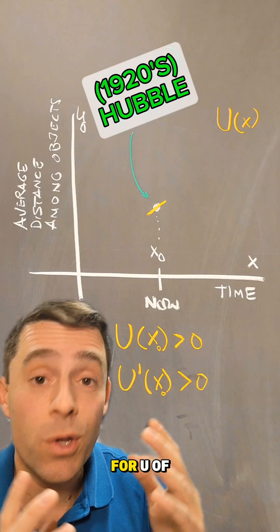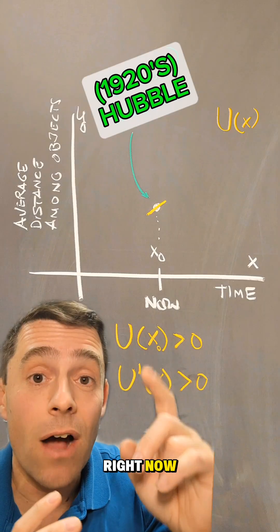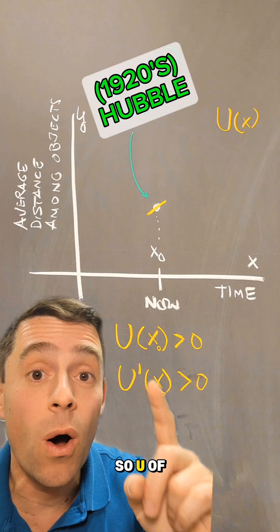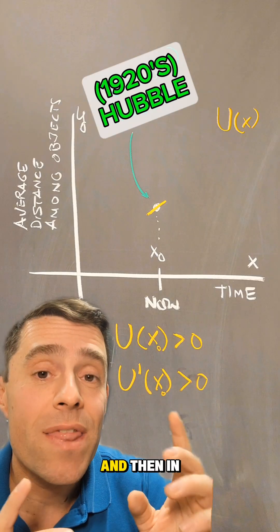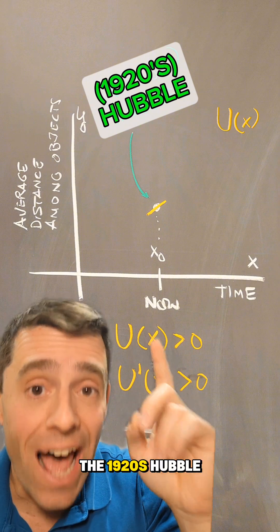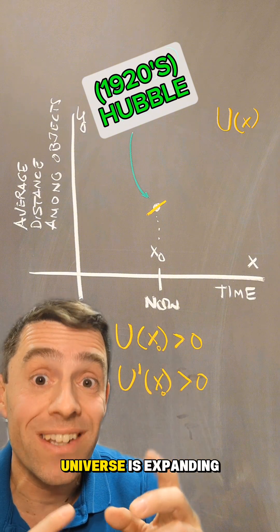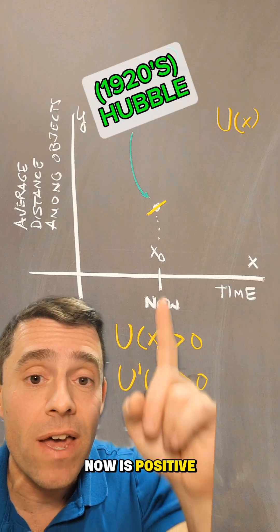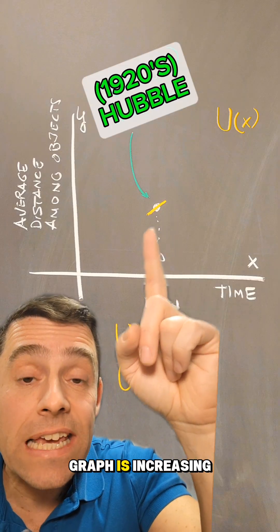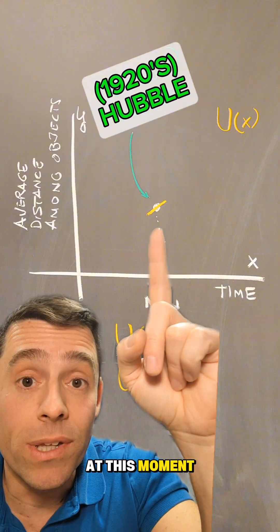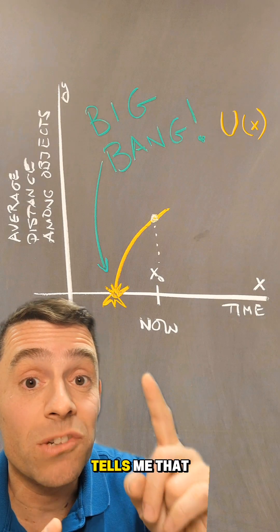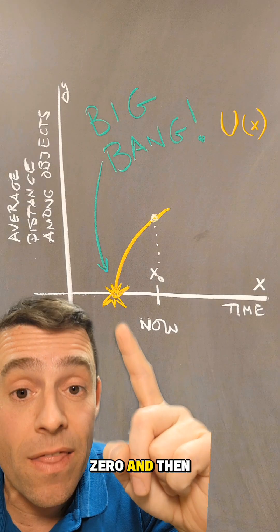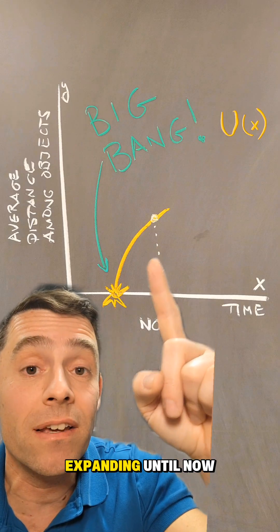The first data point we have for u(x) is that right now the universe does have some positive size. So u(x₀) is positive. And then in the 1920s, Hubble discovered that the universe is expanding. So u'(x₀) is positive, and therefore the graph is increasing at this moment. The Big Bang theory tells me that there is a point in time where u was zero, and then the universe has started expanding until now.